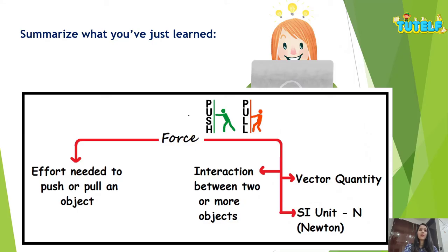Let's quickly summarize what we have done so far. Force is a push or pull applied to an object. Force is the effort needed to push or pull an object. It is a vector quantity, which means it has both direction and magnitude. The SI unit of force is Newton, represented by capital N, and it exists due to the interaction between two or more objects.